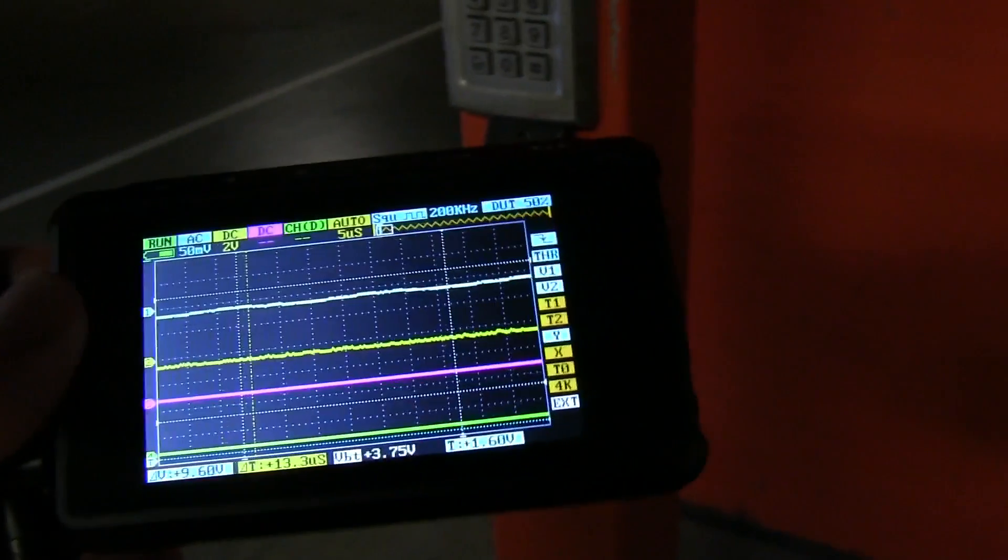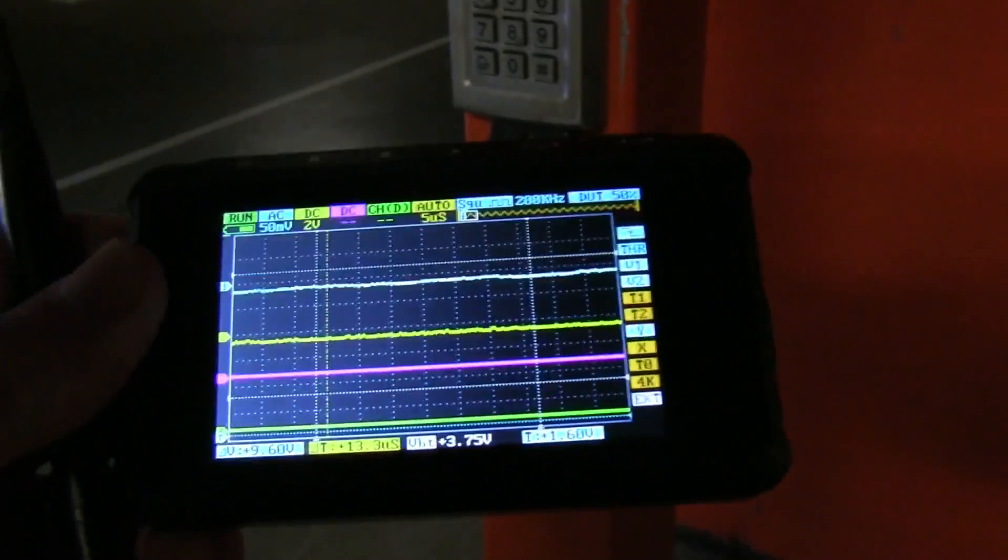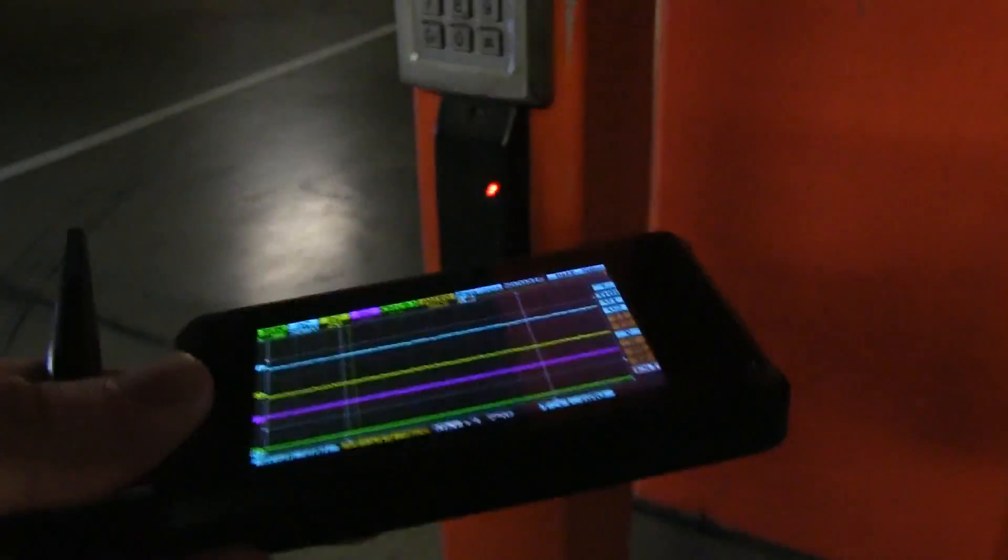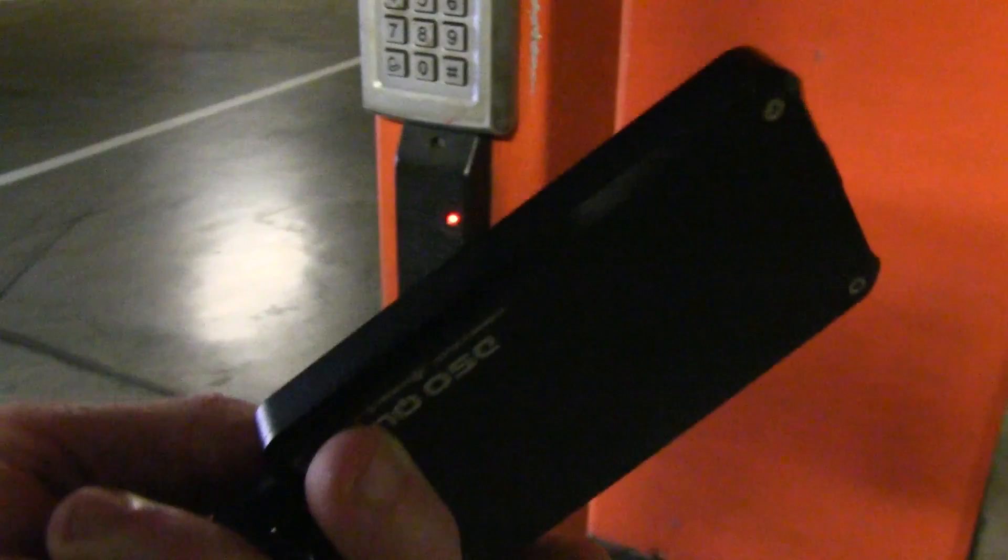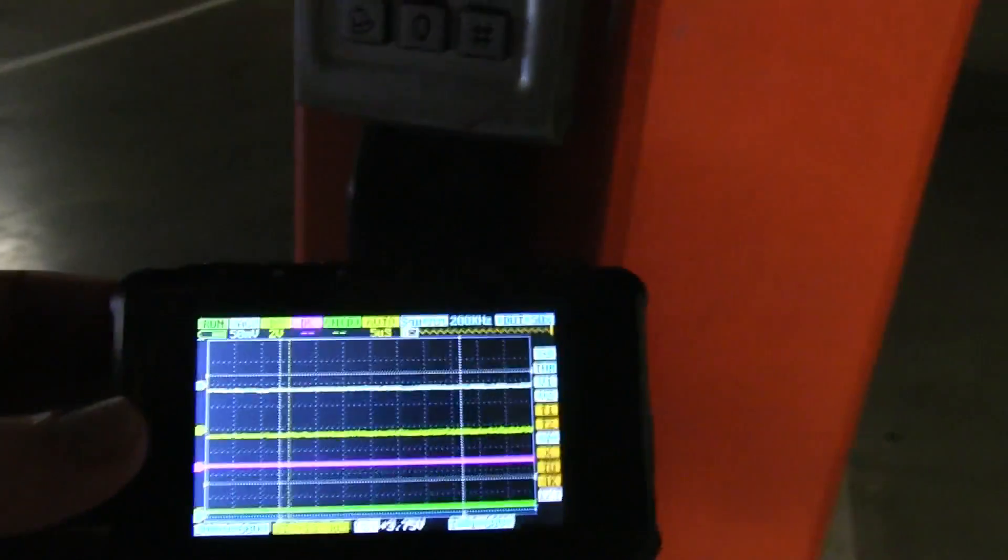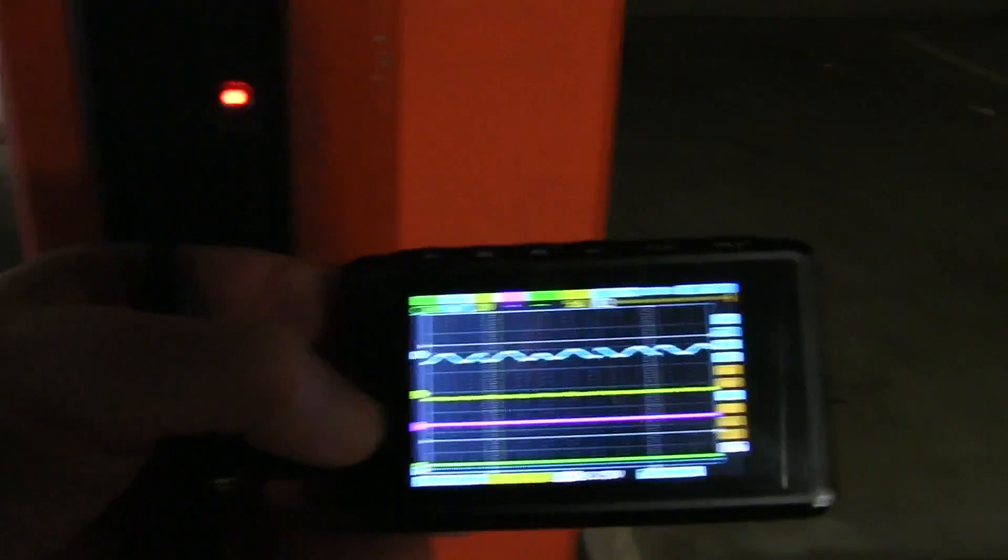Alright, I'm down in the car park, and about the only time that something like this little DSO Quad will actually be useful. I'm just going to check the frequency of this thing and see whether or not it's one of the 125 kHz frequency readers. There we go, probe, I've got the right, there we go, that's a 125 kHz one.